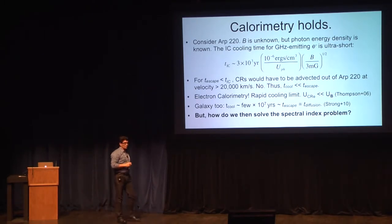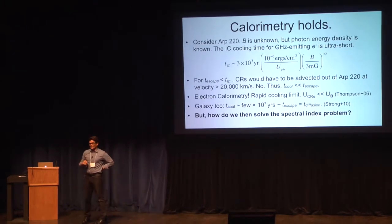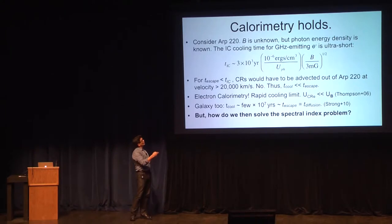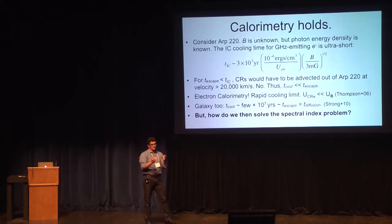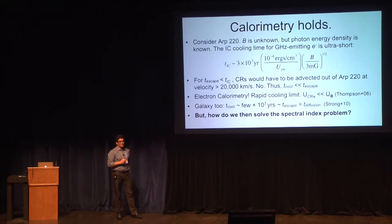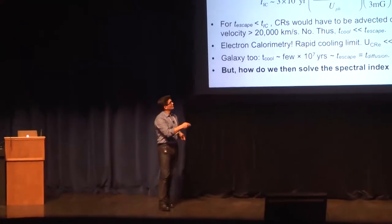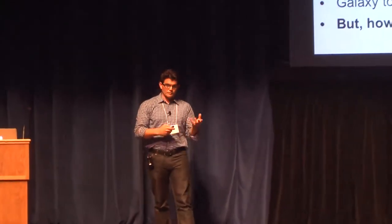Take the extreme example: ARP 220, a famous local ultra-luminous infrared galaxy—super dense with very high photon energy density. Its inverse Compton cooling time is approximately 1,000 years, scaled for a three milligauss magnetic field for electrons emitting at gigahertz. ARP 220's photon energy density is at least a million times the Milky Way's. For calorimetry to fail, cosmic ray electrons would have to be ejected at over 20,000 km/s—that just doesn't happen. We see gigahertz photons, so electron calorimetry holds; we're in the rapid cooling limit.